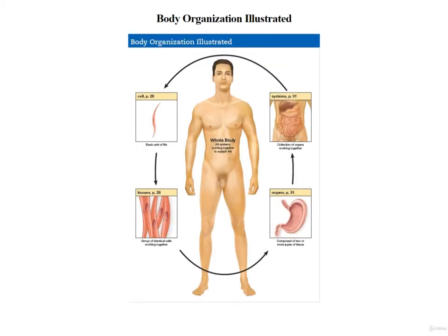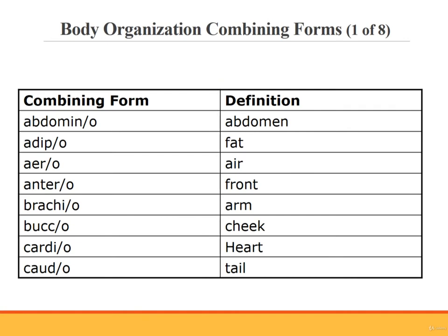The illustration on screen shows how the body is organized. It starts with the cell on the upper left-hand side and follows the arrows counterclockwise to demonstrate the body's organization. There are a number of combining forms commonly used when discussing body organization. We begin introducing those forms on this slide and continue with them for the next several slides.